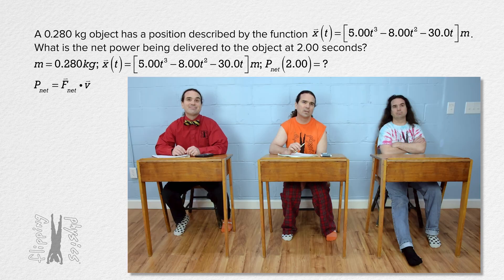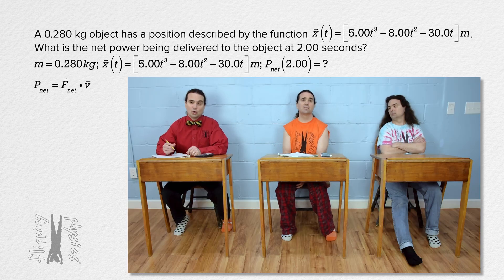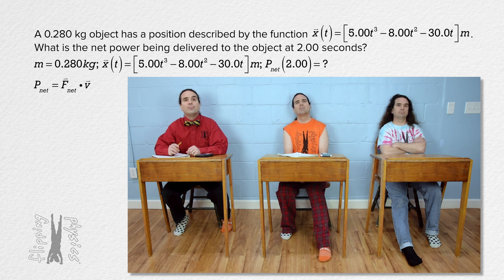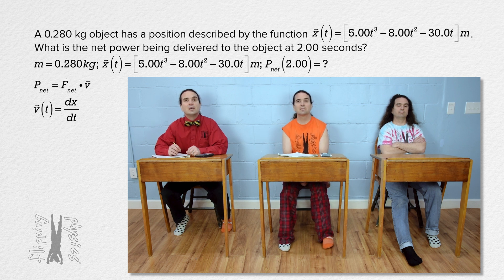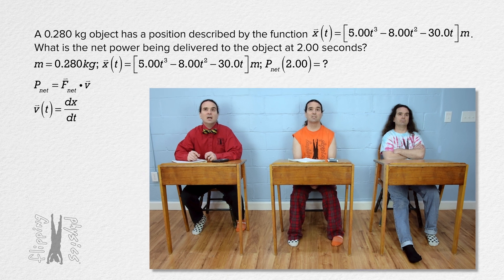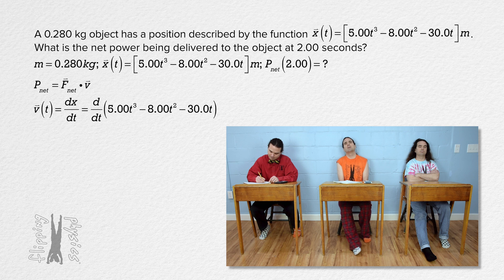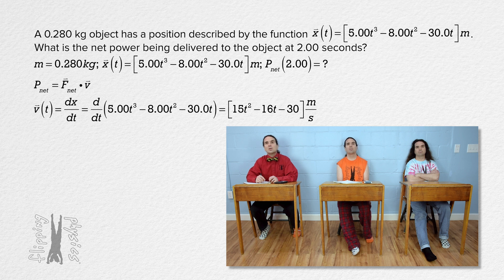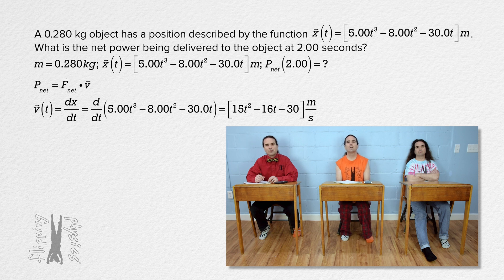Bobby, please figure that out — we need the equations for net force and velocity as functions of time in terms of unit vectors. Velocity equals the derivative of position with respect to time. In this case, velocity equals the derivative of our position function with respect to time: that equals 15t² − 16t − 30 meters per second. We now have the velocity as a function of time. Since it's completely in the x direction, just multiply it by unit vector î.